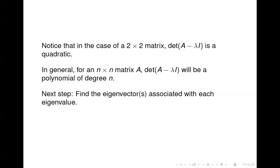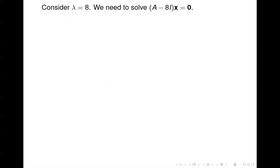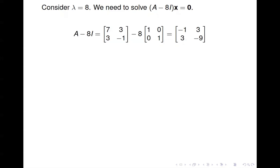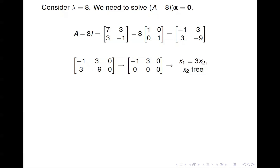We have two eigenvalues for A and we want to find the eigenvectors associated with each. Starting with lambda equals 8, we solve A minus 8I times x equals the zero vector. We compute A minus 8I and set up that homogeneous system. Remember, the whole point of finding the eigenvalues was so that we would have a free variable. If you're trying to find an eigenvector and you don't end up with a free variable, then you've made a mistake somewhere — either you don't have a correct eigenvalue, or you made a mistake solving the system. You should always end up with at least one free variable.